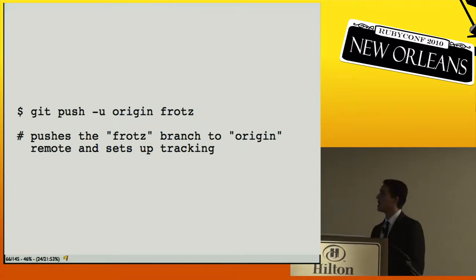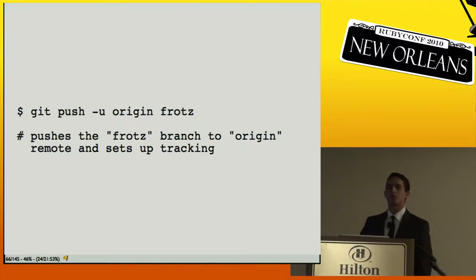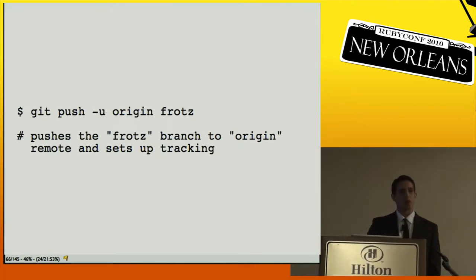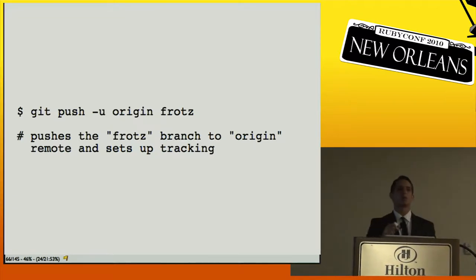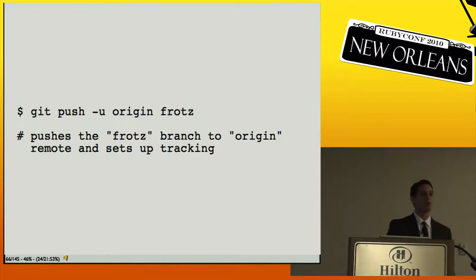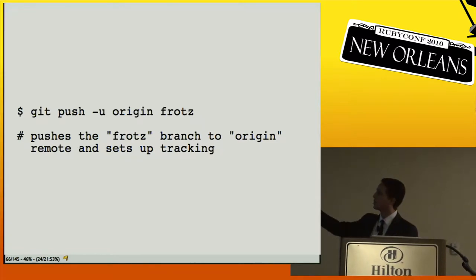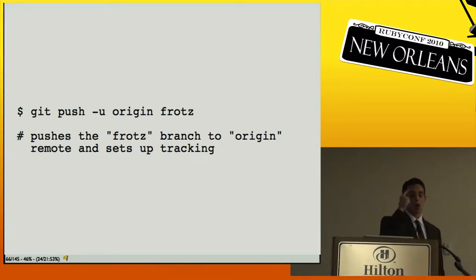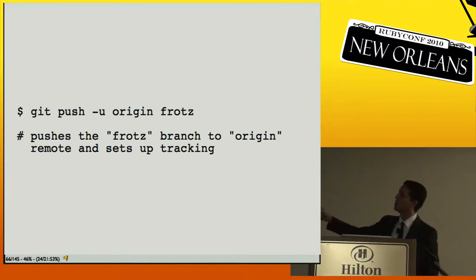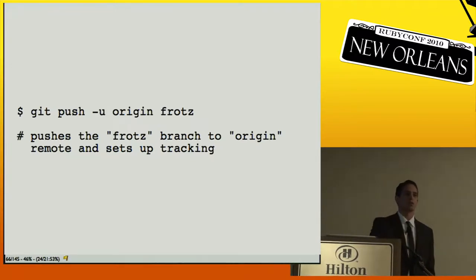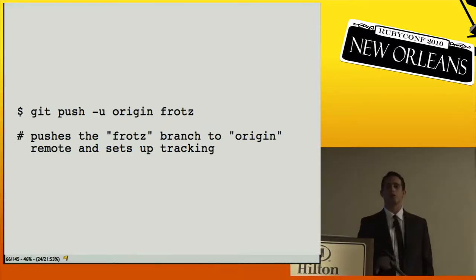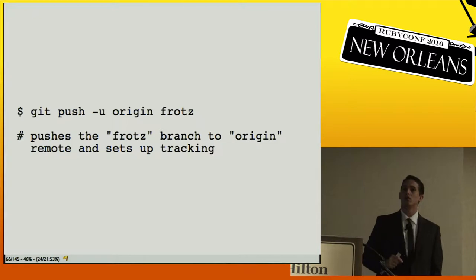If you've created a local branch and want to set it up as tracking when you push, Git doesn't do it automatically. The new way is `git push -u origin frots` — the `-u` flag automatically sets up your branch as tracking wherever you're pushing to. This is fairly nice.